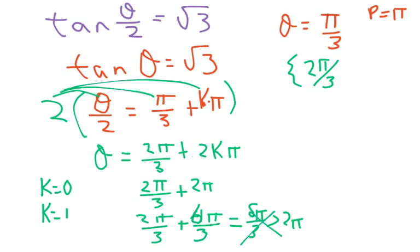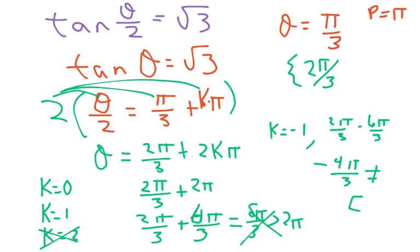If you want, we could try k equals negative 1, which would be 2 pi over 3 minus 6 pi over 3. And clearly, this is a negative number, and that does not belong to 0 and 2 pi, which is what we need to seek. So we only have one solution on this one.